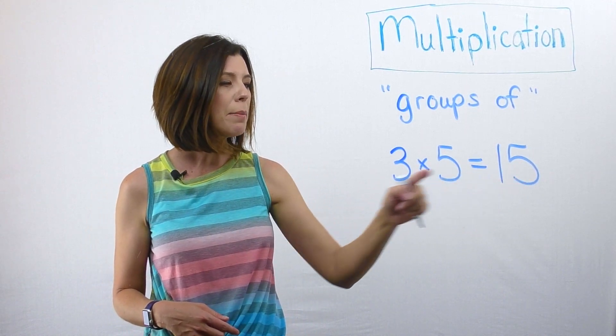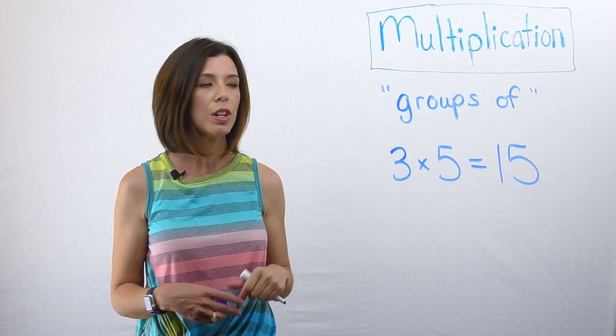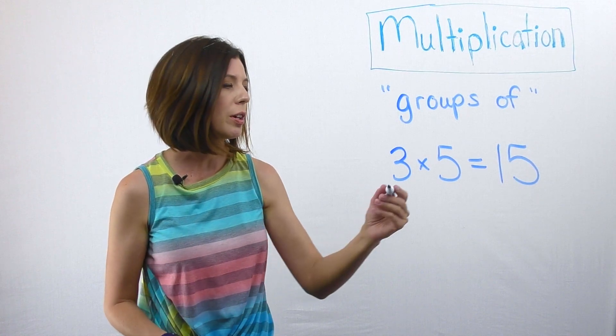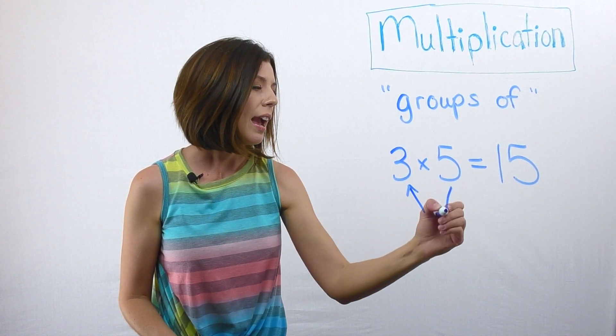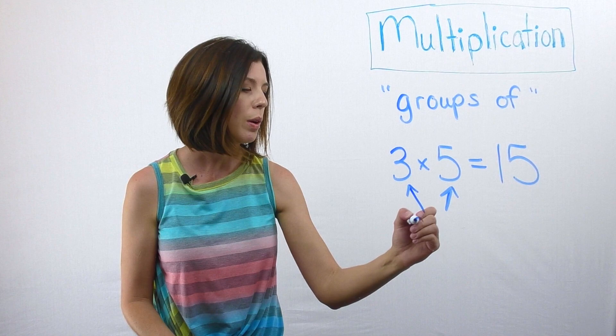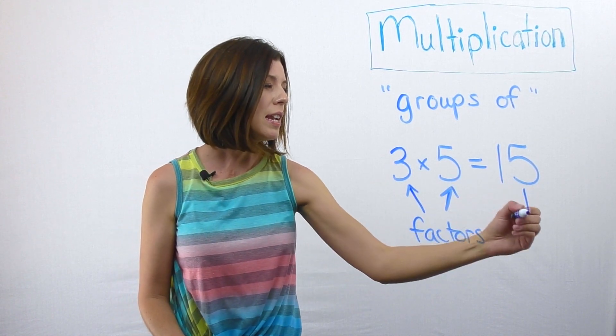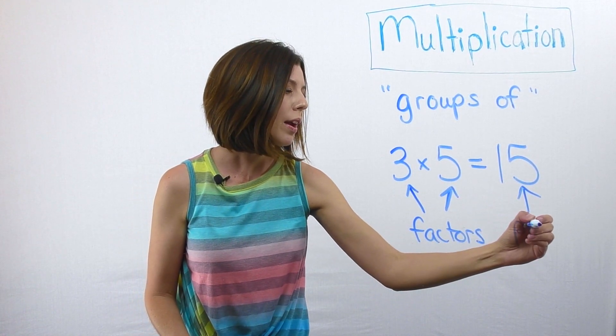we can label these parts of the equation with different vocabulary terms. Three and five, in this case, are what we call factors. Fifteen would be the product.